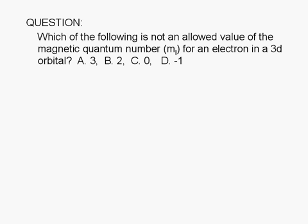Which of the following is not an allowed value for the magnetic quantum number, m sub l, for an electron in a 3d orbital? A: 3, B: 2, C: 0, or D: negative 1?